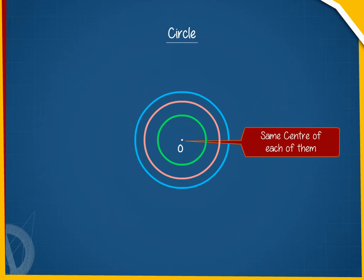Circles having different radii but the same center are called concentric circles. In the same way,